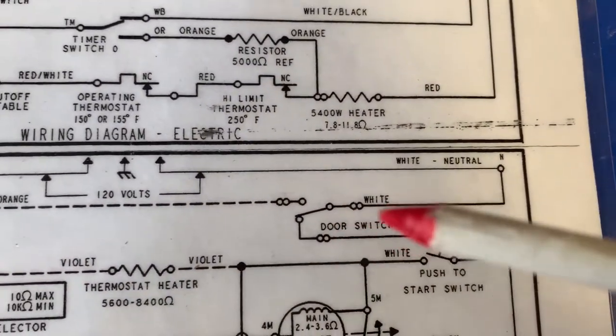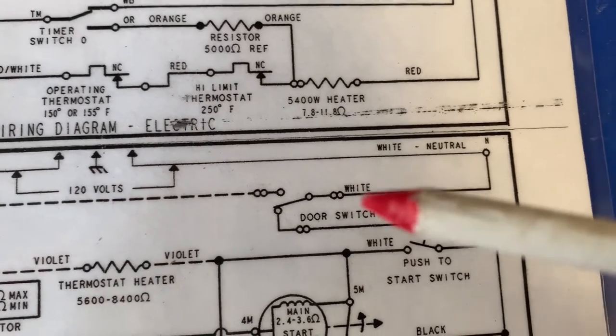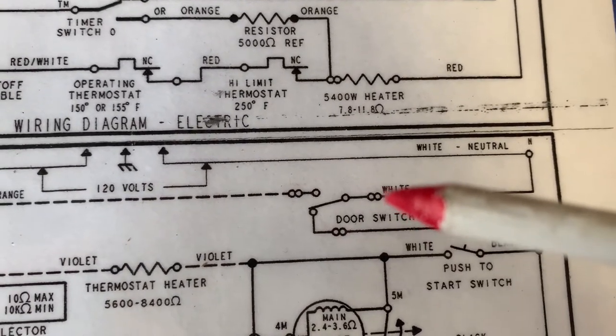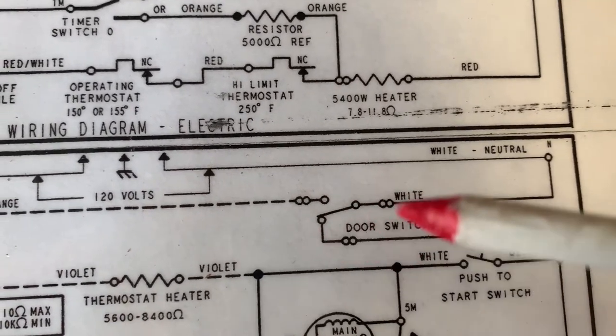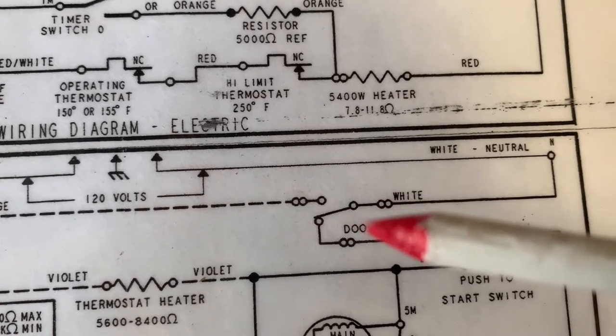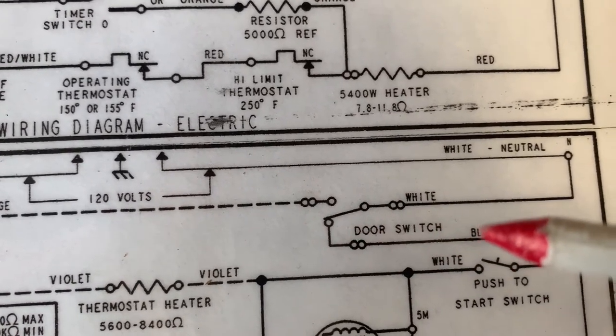So this is called a single pole double throw switch because it's not off or on. It's either one direction or the other. So when the door is closed, which it shows in the drawing here, the dryer can operate.